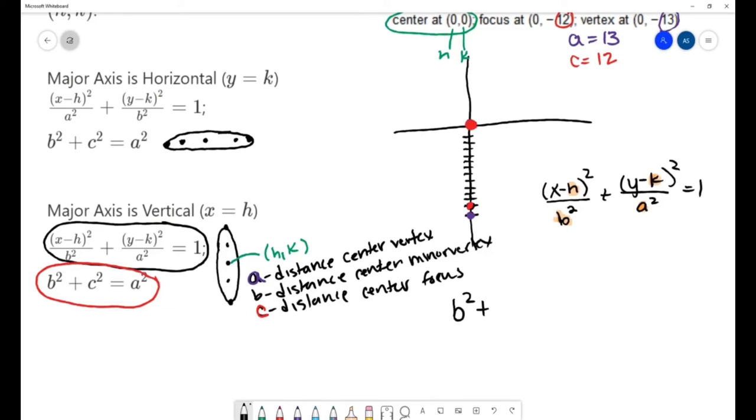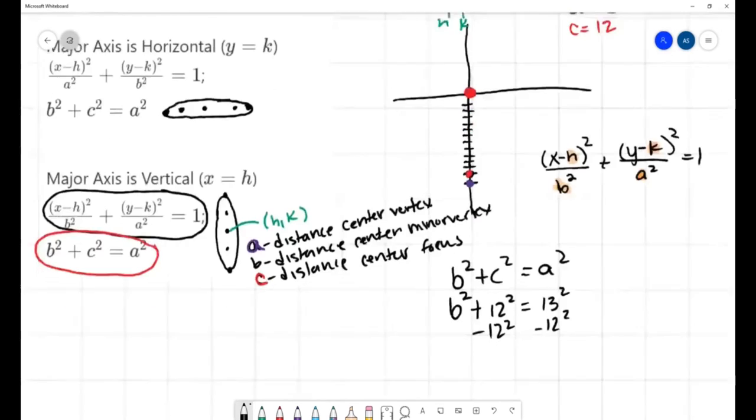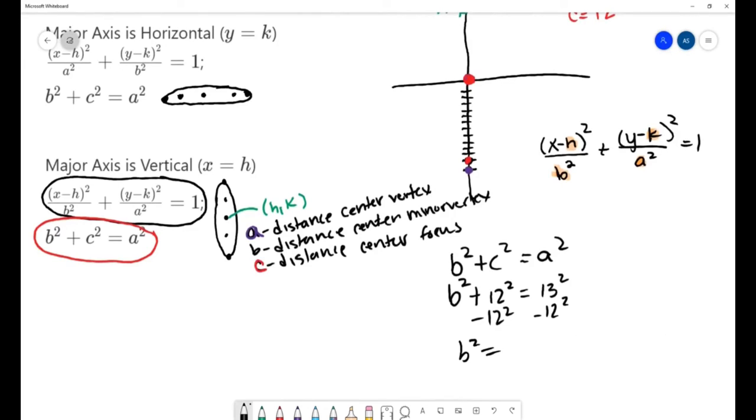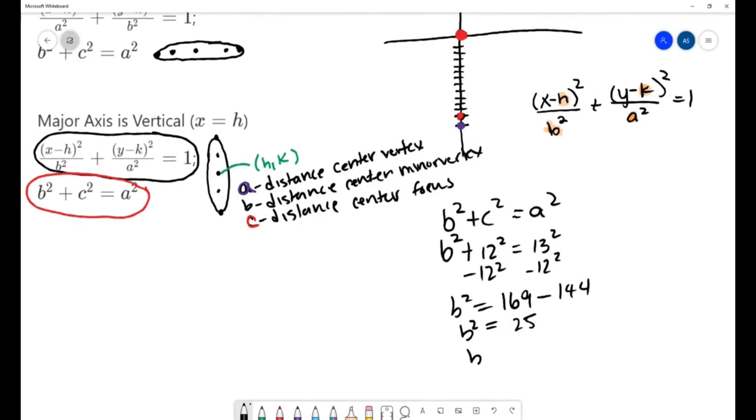So b² + c² = a². b² + 12² = 13². I'm going to subtract 12² and get b² = 13² - that's 169 - minus 12² - that's 144. So b² is equal to 25, and that means that b is equal to 5.